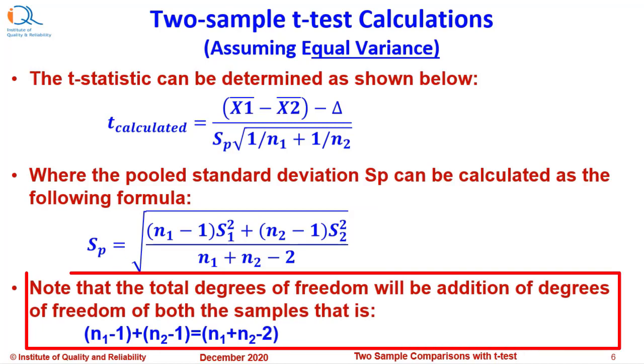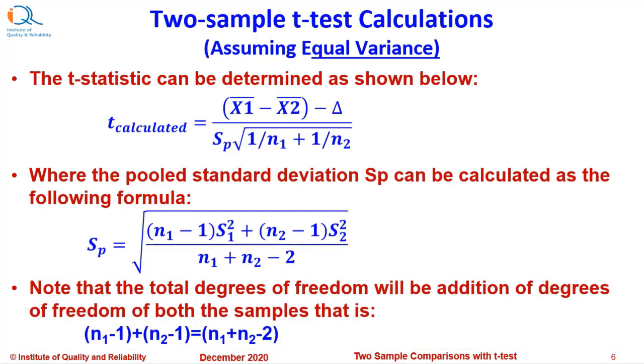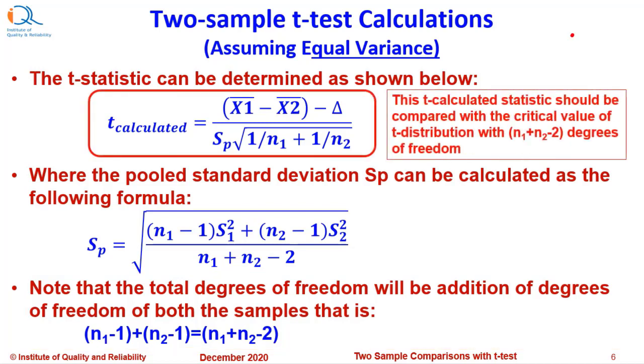Note that the total degrees of freedom will be addition of the degrees of freedom of both the samples and that is n1 minus 1 plus n2 minus 1 or you can also say n1 plus n2 minus 2. The t calculated statistic should be compared with the critical value of t distribution with n1 plus n2 minus 2 degrees of freedom. The alpha risk would be on two tails or one tail depending on the alternate hypothesis.